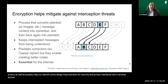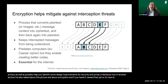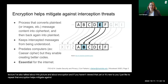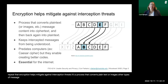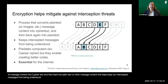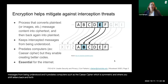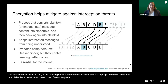In another lecture, I've also talked about encryption. If you haven't viewed that yet, encryption helps mitigate against interception threats. It's a process that converts plain text or images and other types of message content into ciphertext and then back into plain text. This helps keep intercepted messages from being understood. It predates computers — such as the Caesar cipher, which is symmetric, where you shift letters back and forth. Encryption is essential for the internet; people would not accept distributed networks without basic guarantees such as encryption.